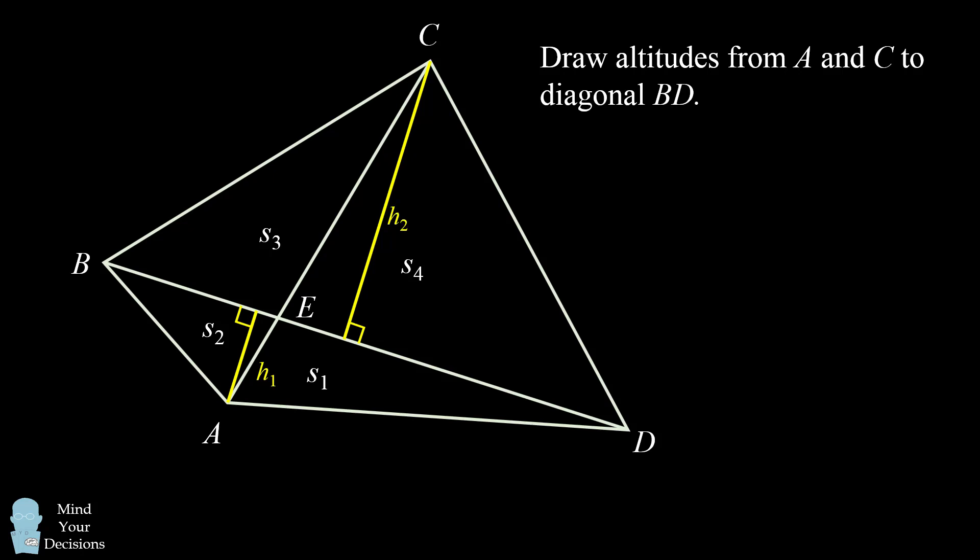We can now use the formula for the area of a triangle to figure out the areas of each of these regions. For example, s1 is the area of a triangle which has a base of DE and a height of h1. So s1 will equal DE times h1 divided by 2.